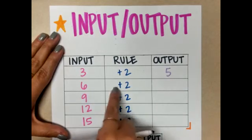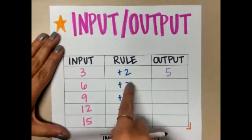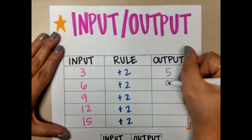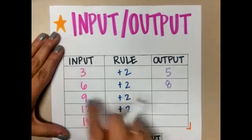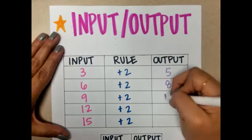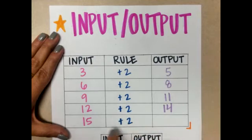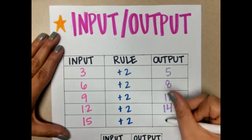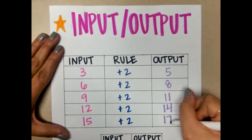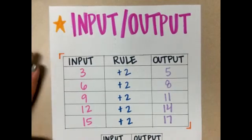6 plus 2 is 8. 9 plus 2 is 11. 12 plus 2 is 14. 15 plus 2 is 17.